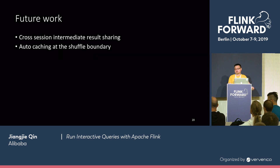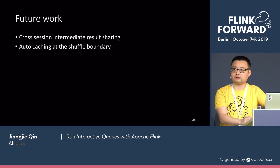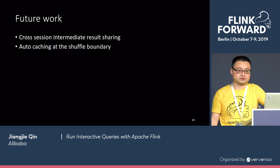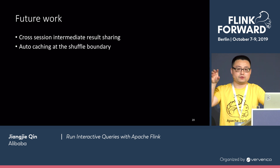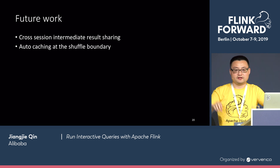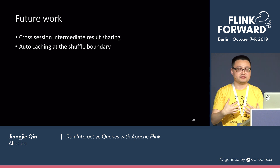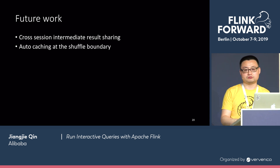What's our future work? There are a few items. The current FLIP-36 only works with in-session intermediate result sharing — if two jobs want to share the same intermediate result, they have to be submitted into the same Flink cluster, essentially in the same session. We want to be able to do cross-session intermediate result sharing as well.